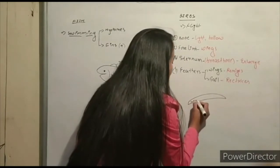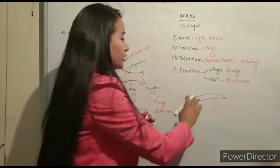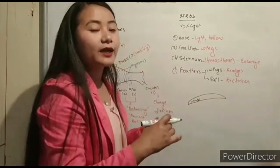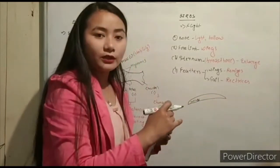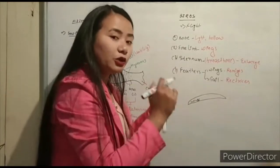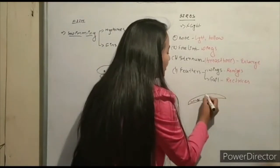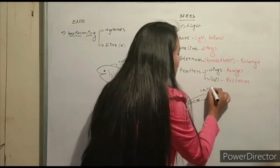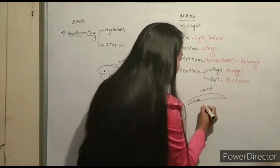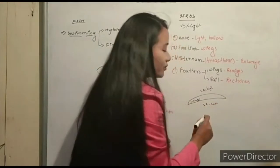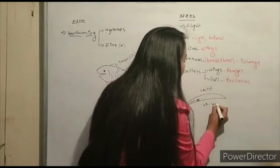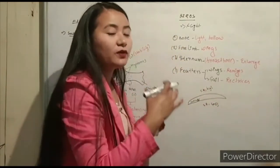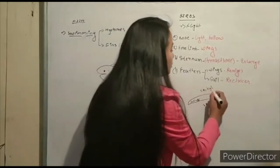Now let's look at the structure of the wing. The outer upper surface of the wing is shaped like a convex surface, so it has a larger surface area. Because the surface area is larger, the air pressure on the upper surface is lower.